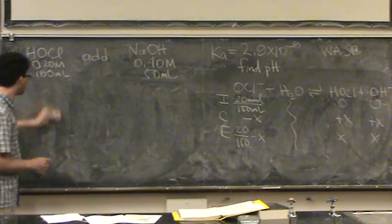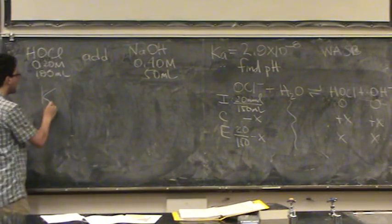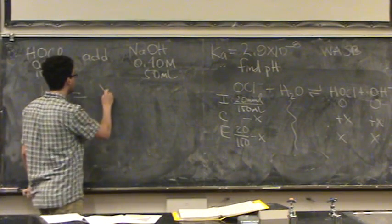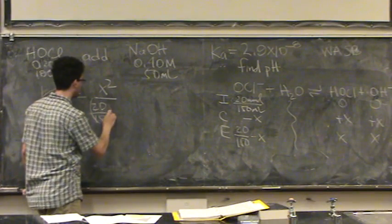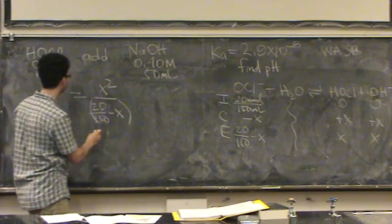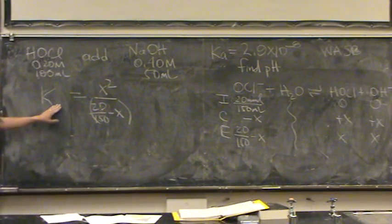I'll finish my ice table. I'm going to set up my K expression. K equals products, X squared, over reactants, 20 over 150. Okay. And this is which K?